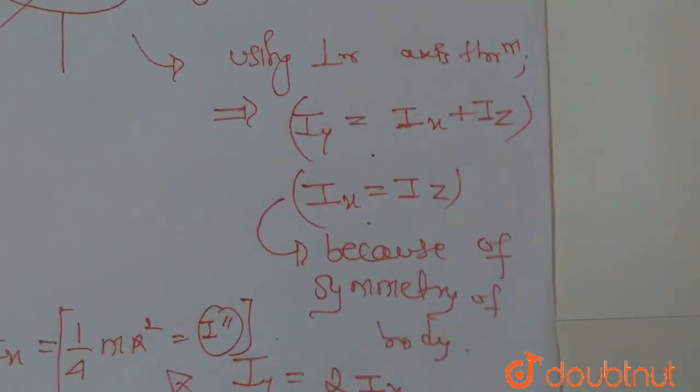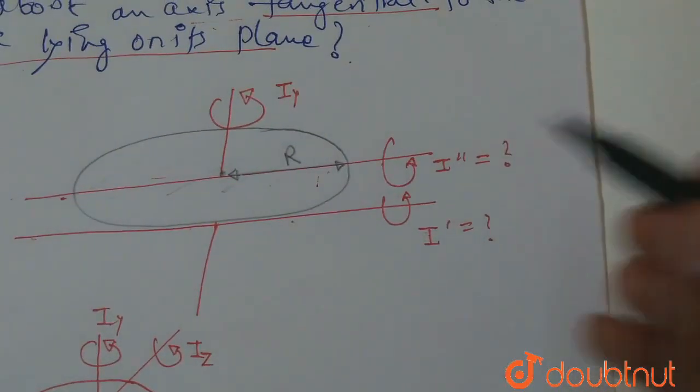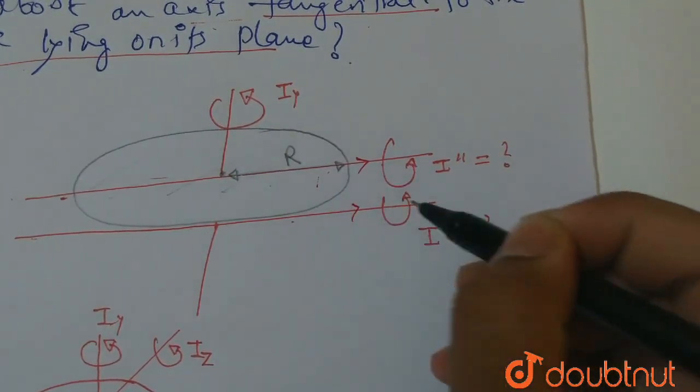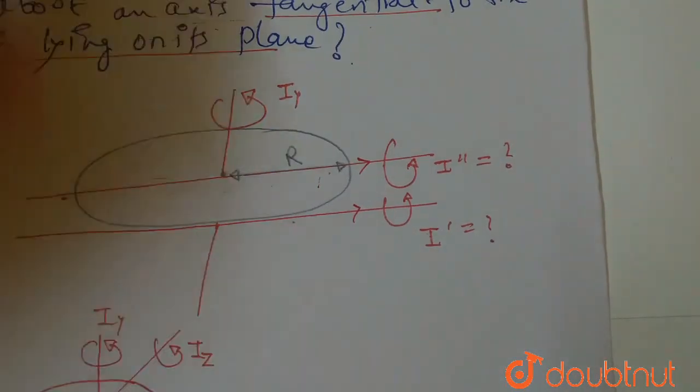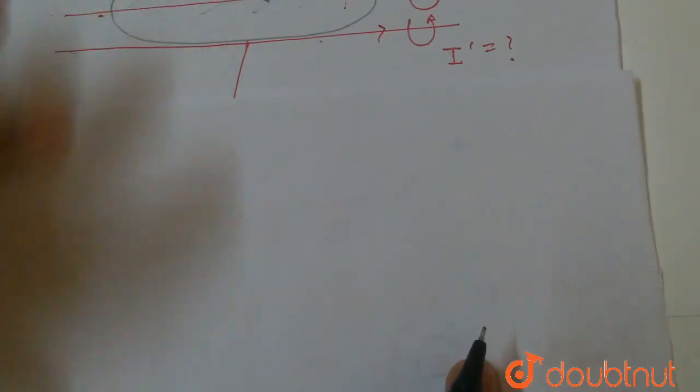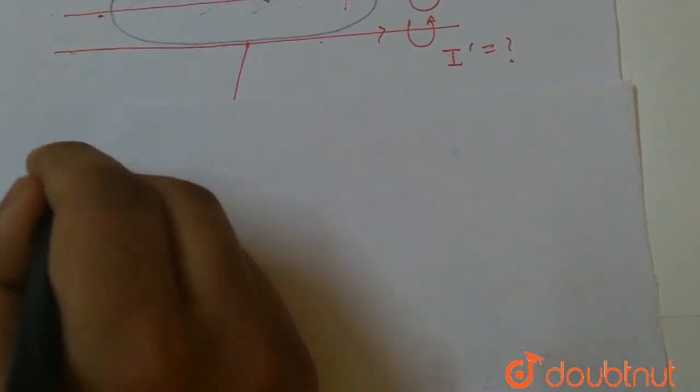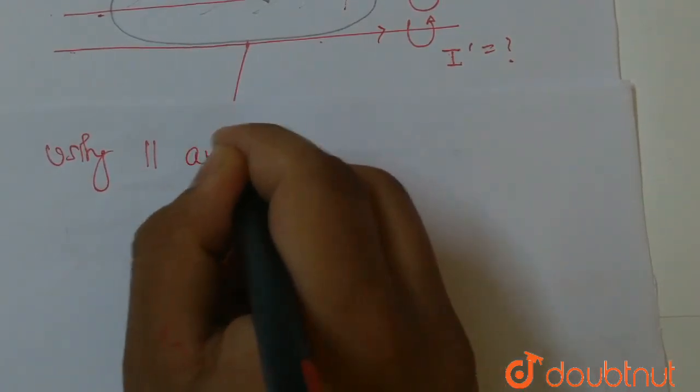So this is very simple. Now we use the parallel axis theorem. These two lines are parallel. So we have a parallel axis theorem, using parallel axis theorem.